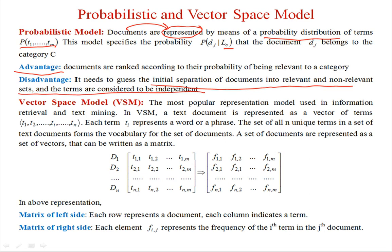These are the demerits of the traditional probabilistic model. The vector space model is the most popular representation model used in information retrieval and text mining. In the binary vector space model, a text document is represented as a vector of terms t1 to tn, where each term t(i) represents a word or phrase. The set of all unique terms in the document collection forms the vocabulary. A set of documents is represented as a matrix where t(1,1) represents the first term of document d1, and so on.